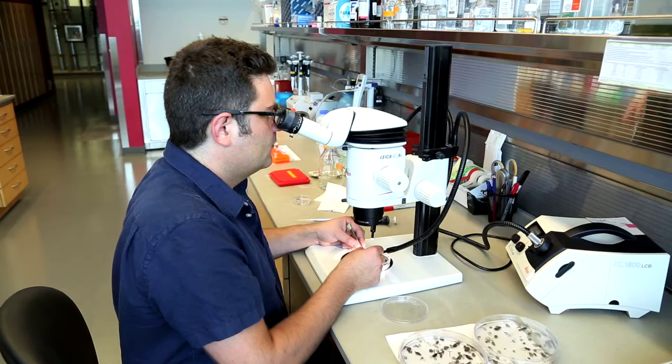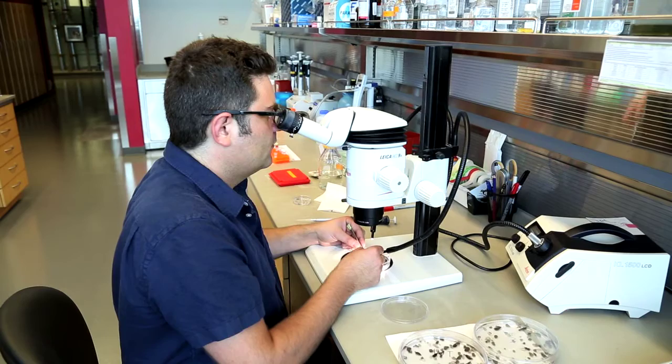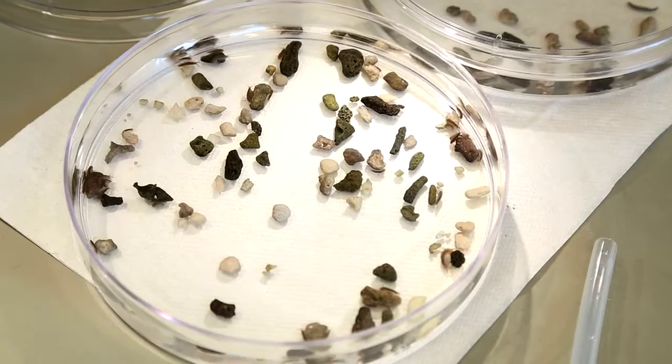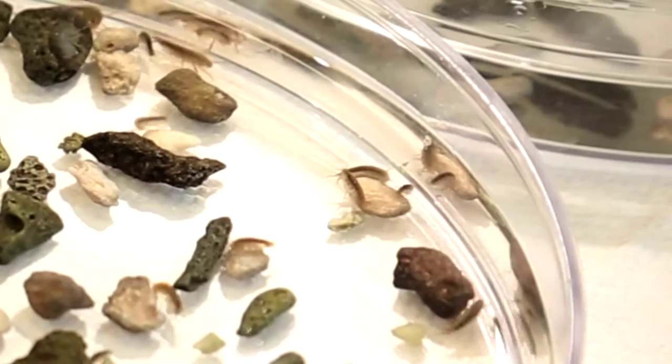Here at Janelia I'm focusing explicitly on a crustacean model called Parialia hawaiensis that is really ideal to study appendage morphogenesis, that is body outgrowths. The reason why I became really interested in this animal model is because of its striking appendage diversity.